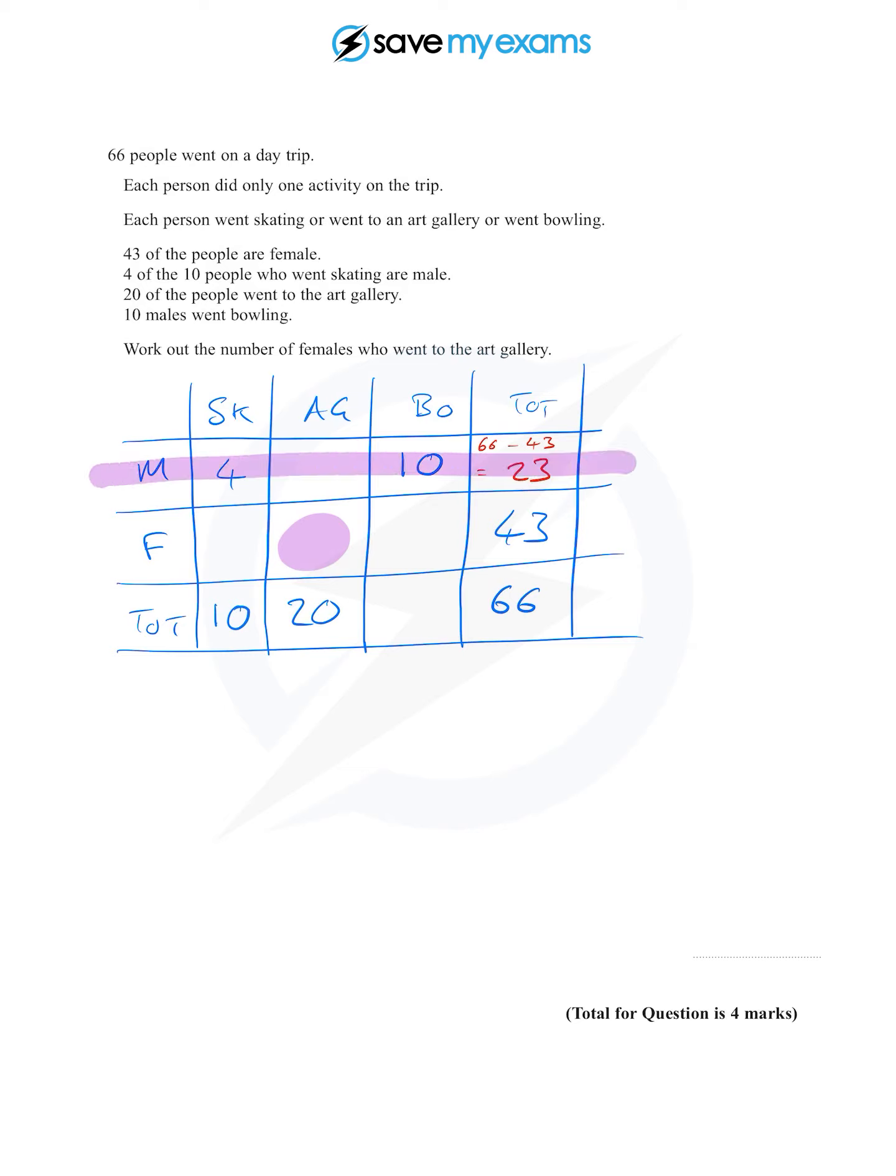Now you can see that we've only got one thing missing from the males row, and that's the number of males who've visited the art gallery. There are 23 males, four of them went skating, 10 of them went bowling, and so 23 minus 10 is 13, minus 4 is 9.